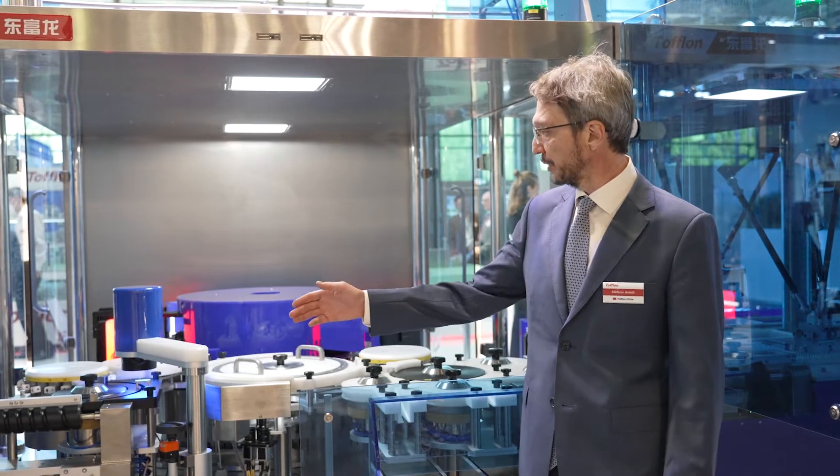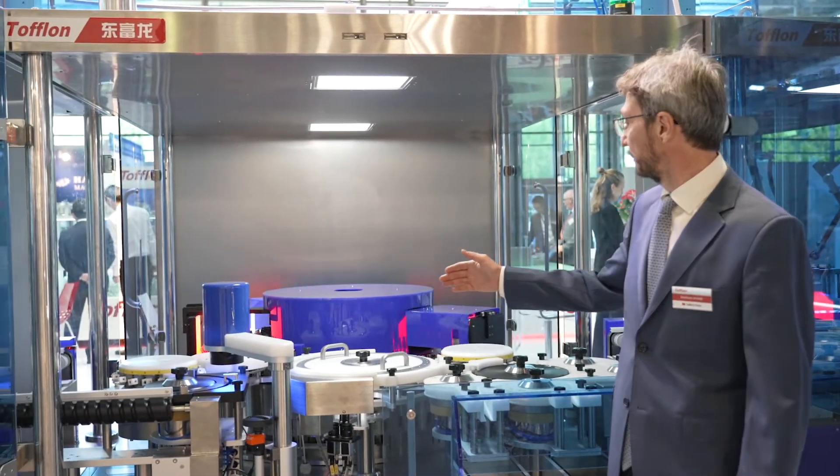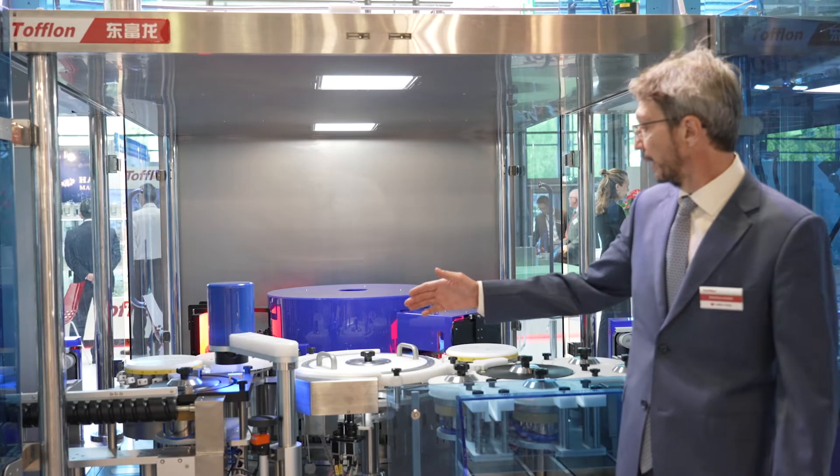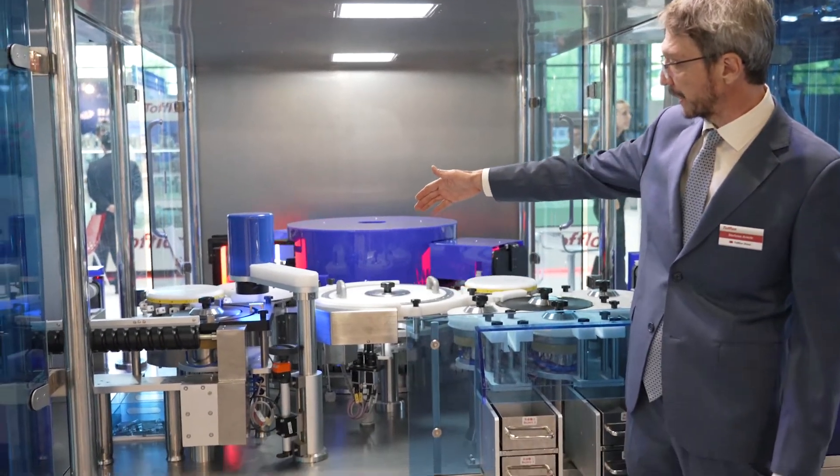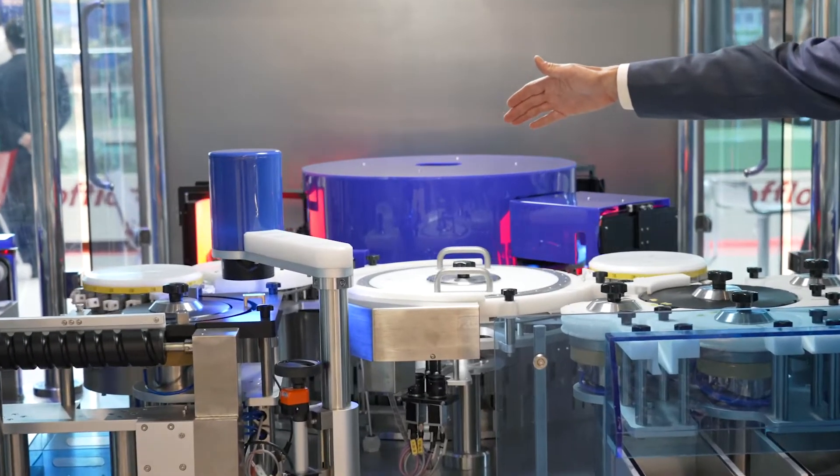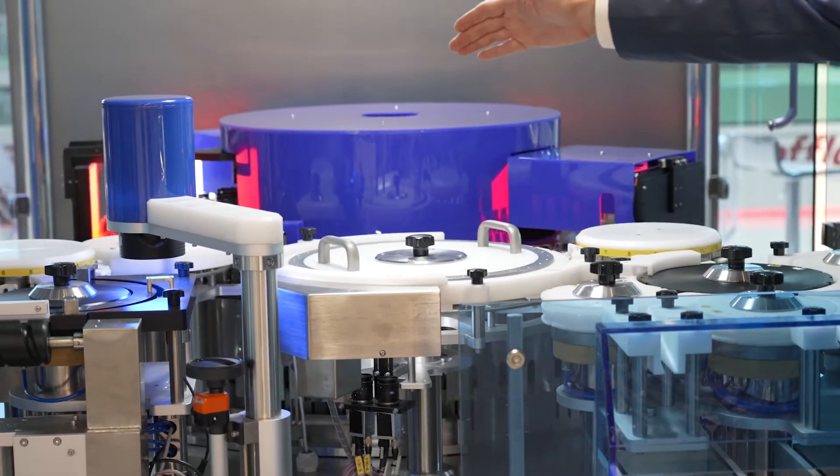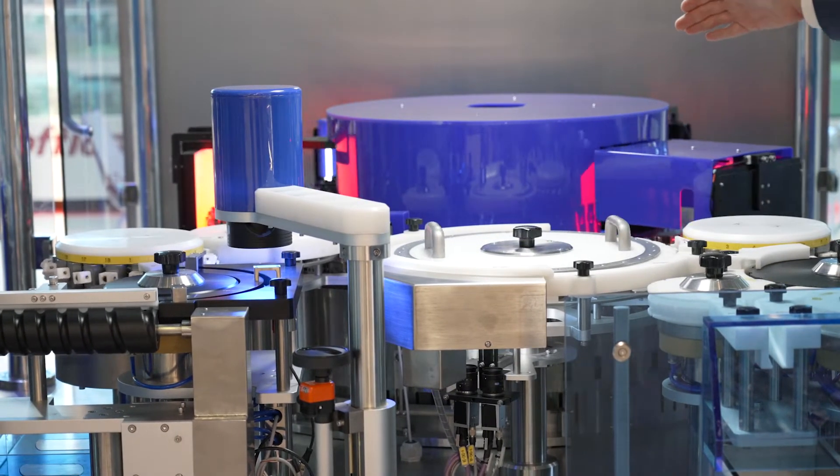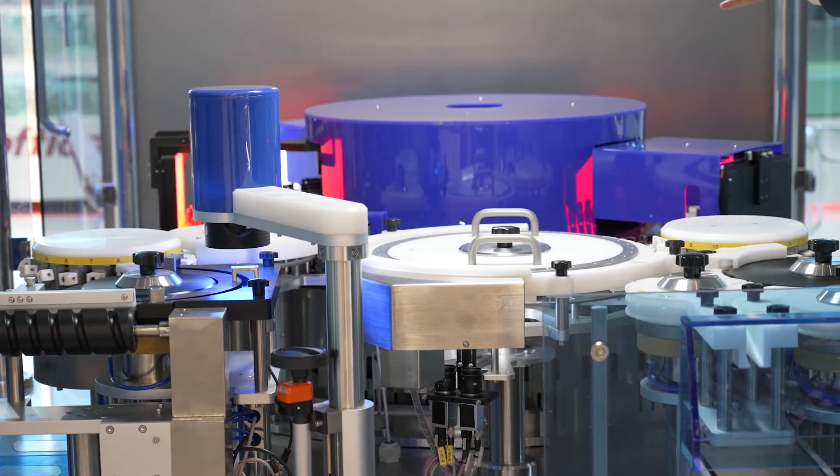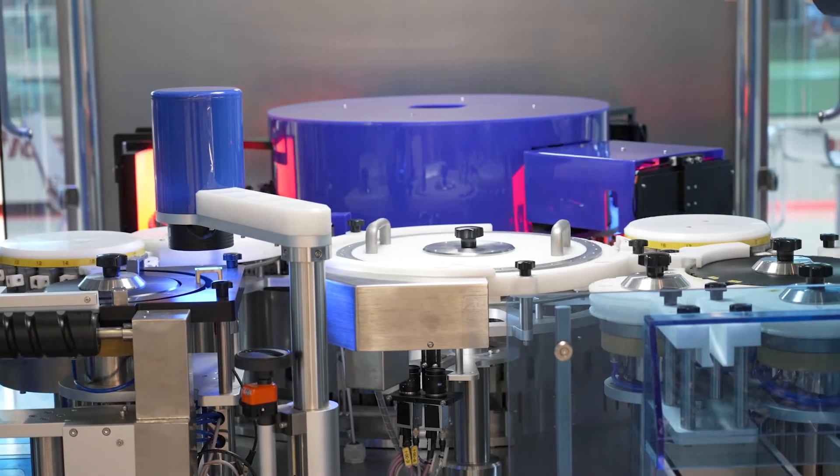Now I will show you the inspection area, the most important part of the machine. After infeed, the syringes are checked for the flange to reject the broken syringes. Then they are turned upside down and then they enter the inspection machine. In the inspection machine, in this case, we have four stations.